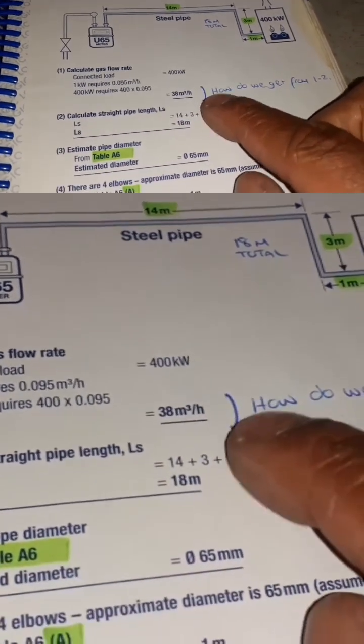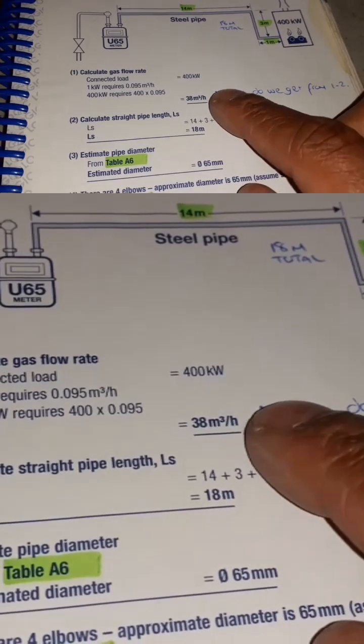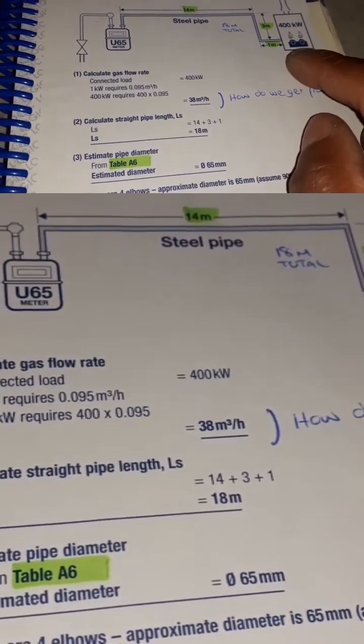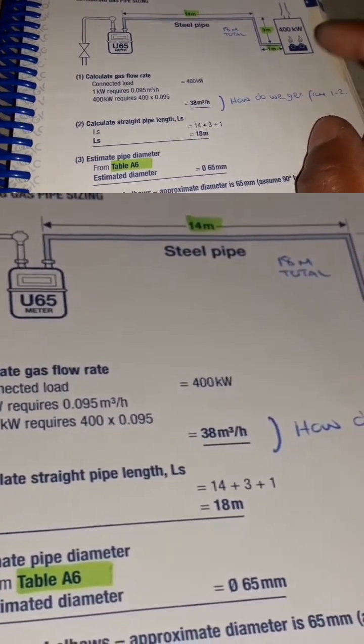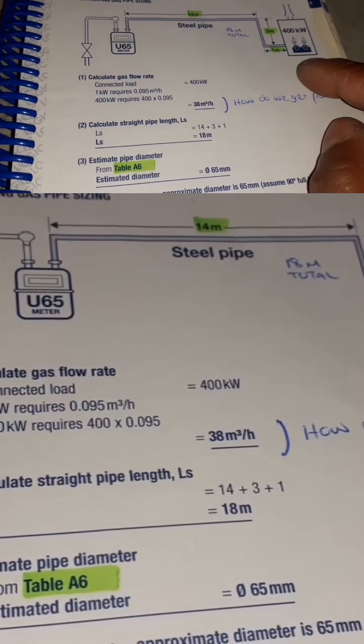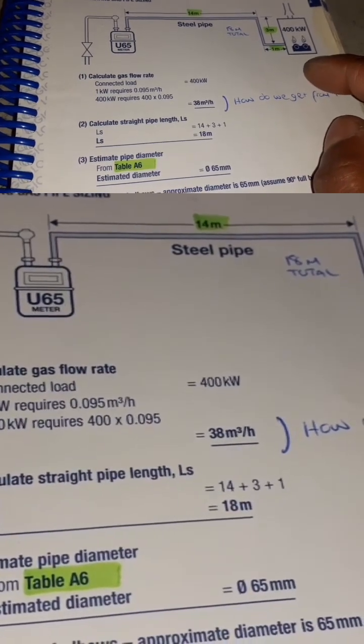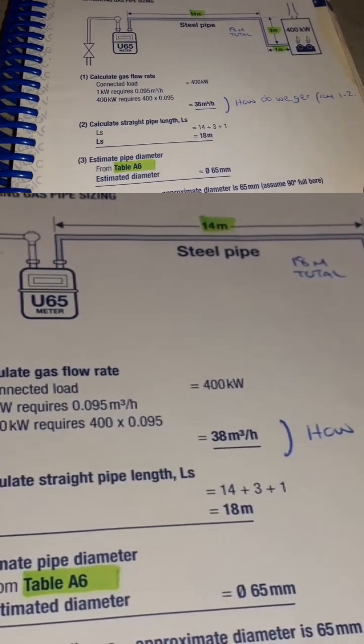So that will give us our flow rate that is required to provide 400 kilowatt boilers with adequate gas. That will let us know the size of pipe we need depending on our pipe run.